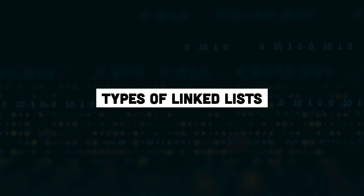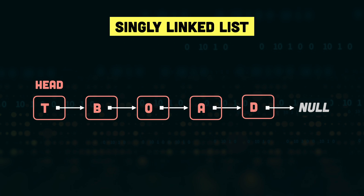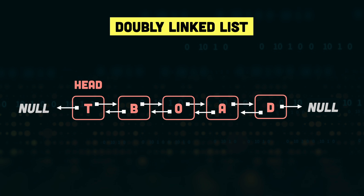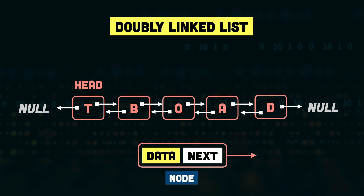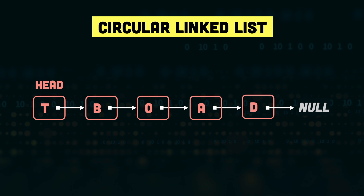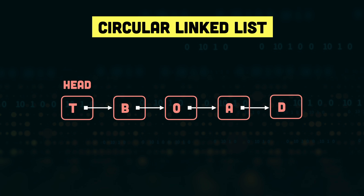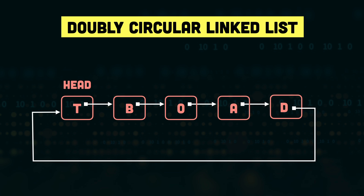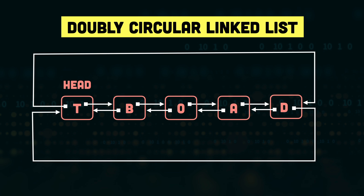Finally, we have the types of linked lists. The type we've looked at so far is called the singly linked list — each node has two parts: the data and the address of the next node. The next type is the doubly linked list, which is similar but each node not only points to the next node, it also holds a reference to the previous node. So in addition to data and next address, there is an additional field referring to the previous node. Next is the circular linked list, where the tail node, instead of having a null address, points back to the head, creating a circular arrangement. Finally, we have the doubly circular linked list, where each node points to the previous node and the first node also points to the last node.